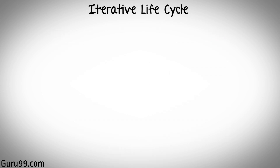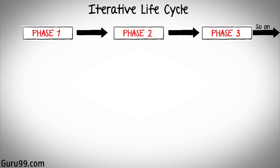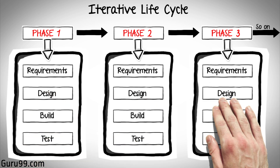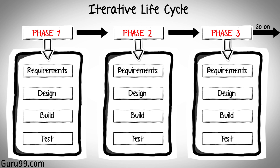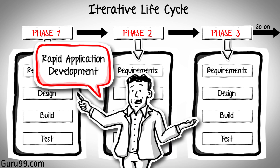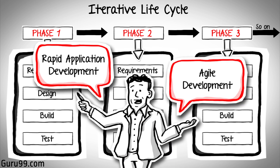Apart from the V model, there are iterative development models, where development is carried out in phases, with each phase adding a functionality to the software. Each phase comprises its own independent set of development and testing activities. Good examples of development lifecycles following the iterative method are Rapid Application Development and Agile Development.